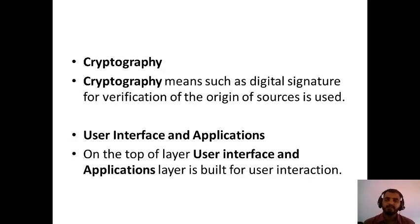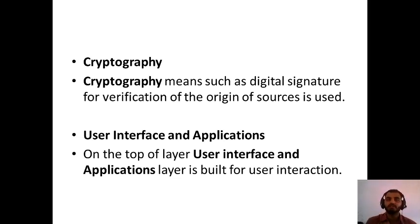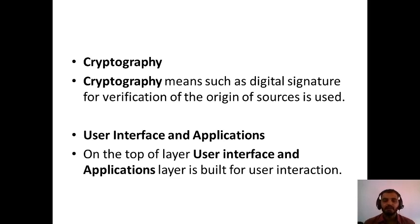With reference to cryptography — cryptography such as digital signatures is used for verification of origins of resources. The key that is used is represented here for encoding and decoding information. Information passed on the web should be secured through cryptography — encrypting and decrypting of things. On top of all the layers, the user interface and application layer is built for user interaction.